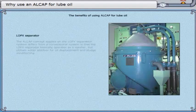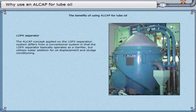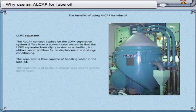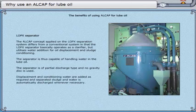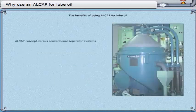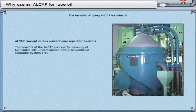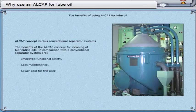The Alcap concept applied on the LOPX separation system differs from a conventional system in that the LOPX separator basically operates as a clarifier, but utilizes water addition for oil displacement and sludge conditioning. The separator is thus capable of handling water in the lube oil. It is of partial discharge type, and no gravity disk is used. Displacement and conditioning water are added as required, and separated sludge and water are automatically discharged whenever necessary. The benefits of the Alcap concept for cleaning of lubricating oils, in comparison with a conventional separator system, are improved functional safety, less maintenance, lower cost for the user, and being more suitable to modern-day lubricating oil demands.